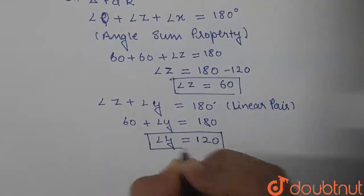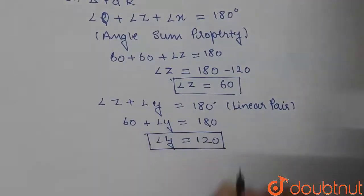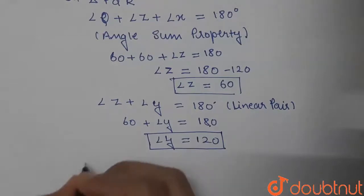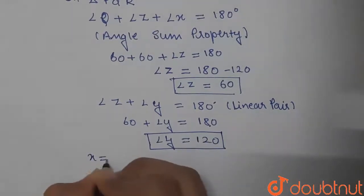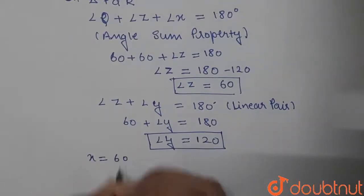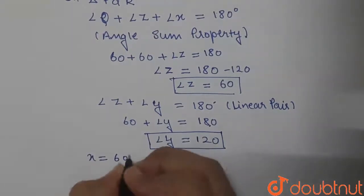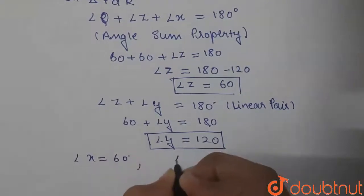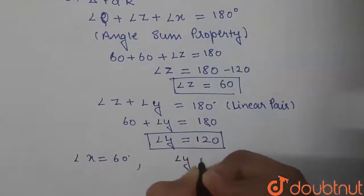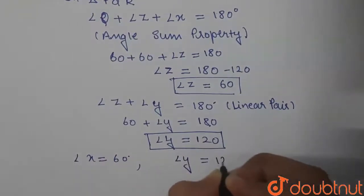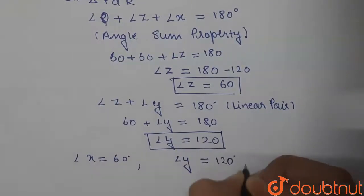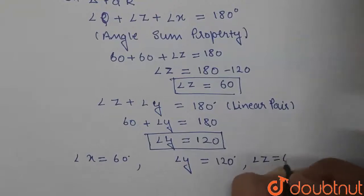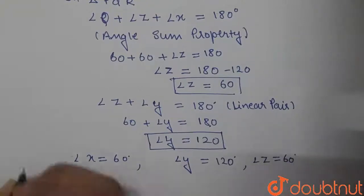So we were asked to find the values for angle x, y and z. Angle x is equal to 60°, angle y is equal to 120°, and angle z is equal to 60°. This is the required answer.